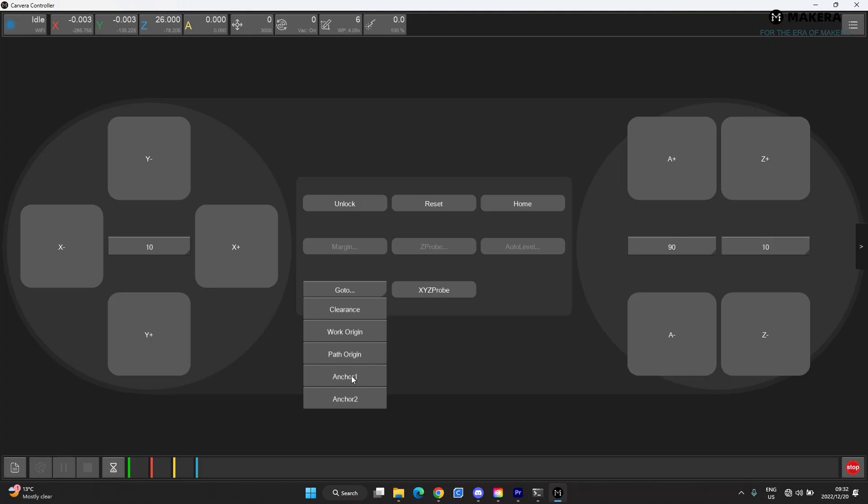To change the coordinates back to XY0 at anchor point one, go to the position of anchor point one and set the coordinates back to X0, Y0 and Z will be updated once we do an auto Z height probe in the next cut.